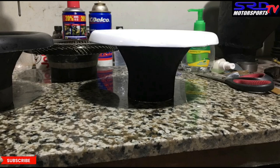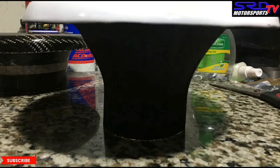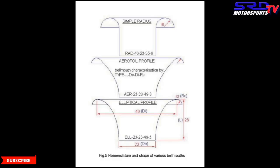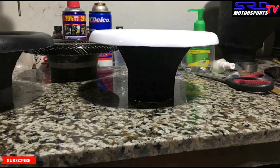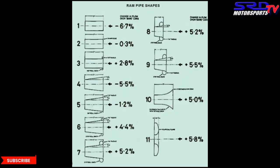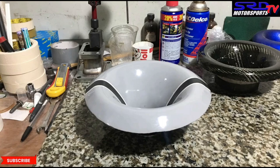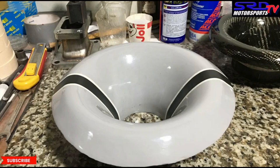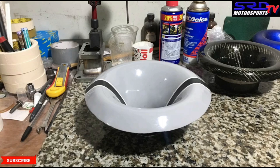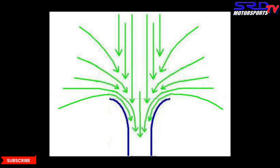Remember this velocity stack, which was inspired by Gordon P. Blair's elliptical profile? Because of that diagram, we added a lip on the outside of our velocity stack to add curve. This way, it's going to be pulling air even from the perimeter and almost below the horizontal plane. We added tape so you can visually see it better — you can see the curve is really good, it's elliptical. And this is going to be really, really good for the dyno.